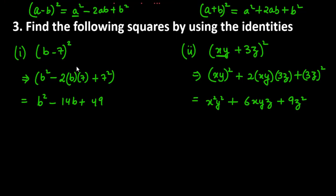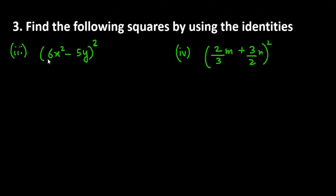Now, let's move on to the third part, which is 6x square minus 5y whole square. If you can see here again, we have subtraction sign in between them.